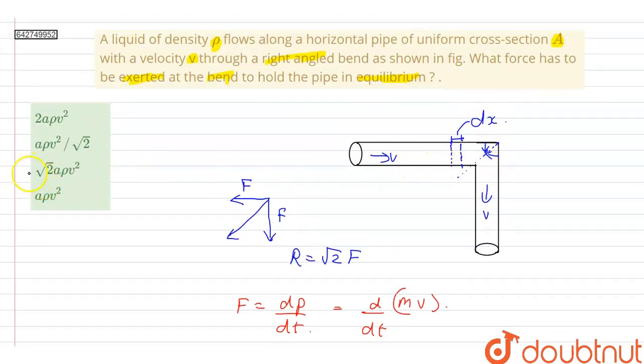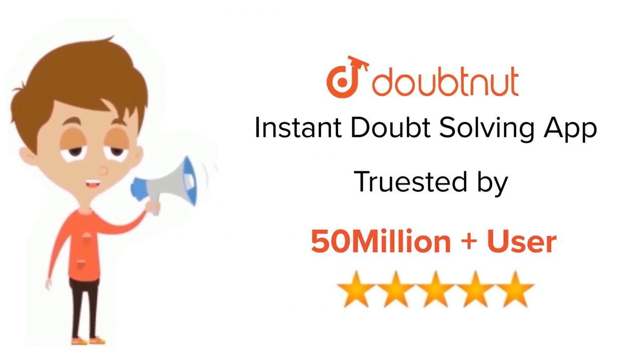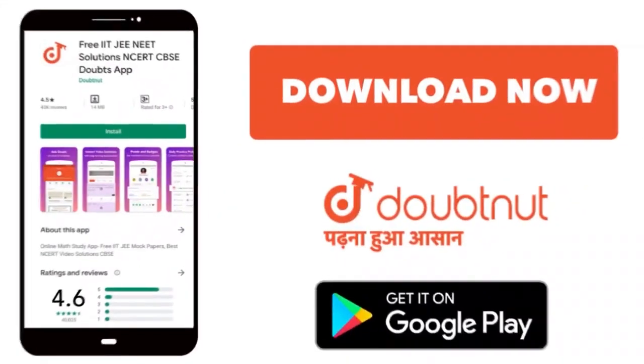Therefore, the correct option will be option C. For class 6 to 12, IIT-JEE and NEET level, trusted by more than 5 crore students. Download Doubtnit app today.